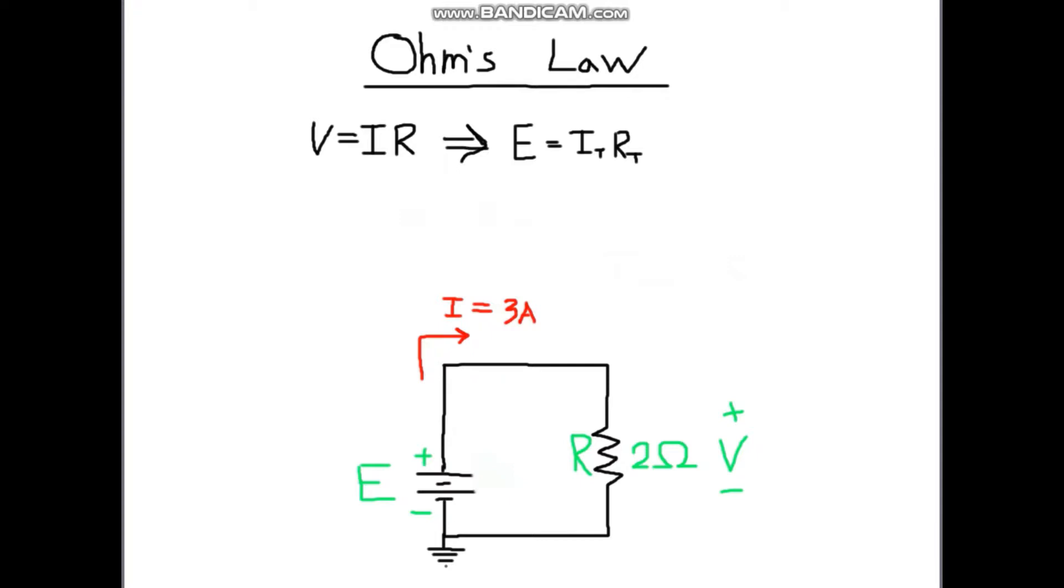In this particular example, we're going to calculate the voltage across the resistor that's in this circuit. We know that V equals IR. Voltage equals current times resistance. So we're going to take our three amp current and multiply it by the two Ohms that our resistor carries, and we'll get six volts.